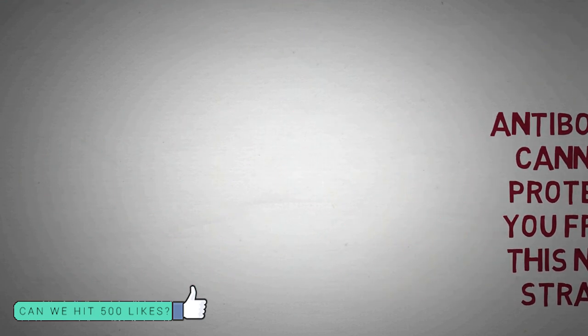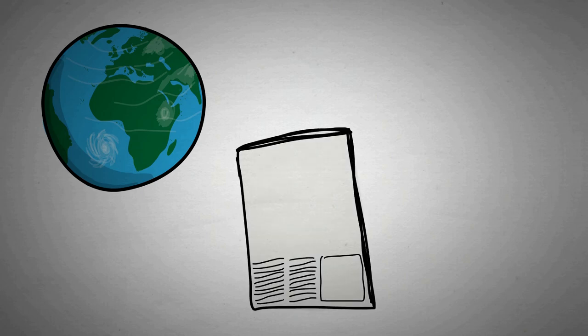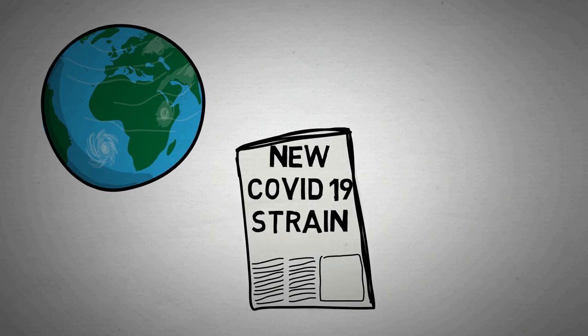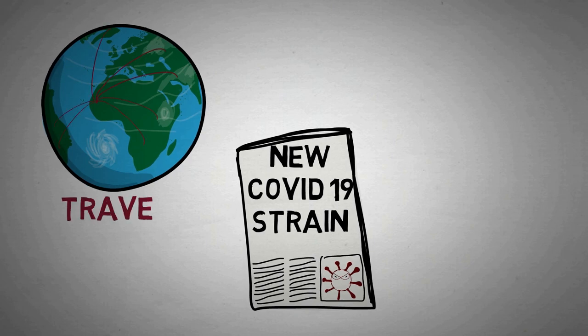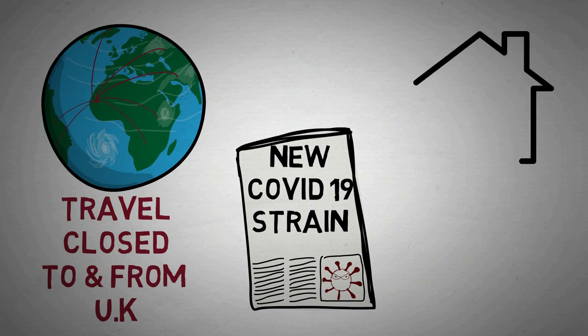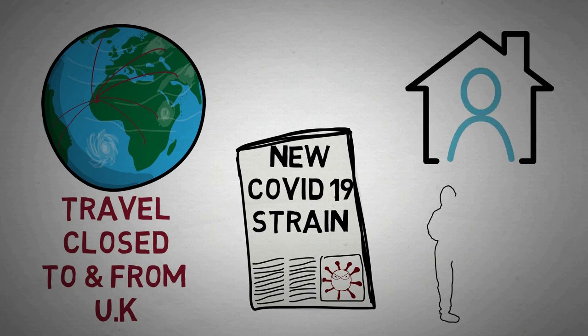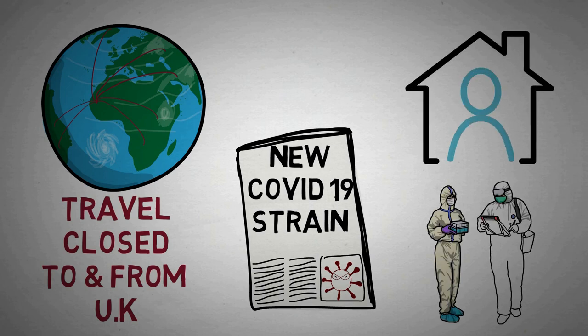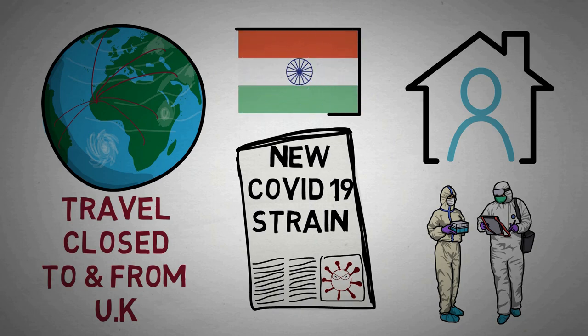What does this mean for us in the present? For the time being, things are looking up. The world seems to have understood the importance of taking swift and decisive action. As soon as the news of the new strain broke, countries closed foreign travel, especially from the UK. As for people who had already returned, they and their respective contacts were traced, placed into quarantine, and promptly tested. Even countries like India, where over 10 million people have been affected by COVID already, have successfully controlled the spread of this foreign strain.